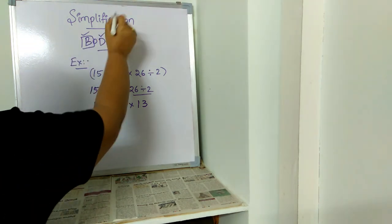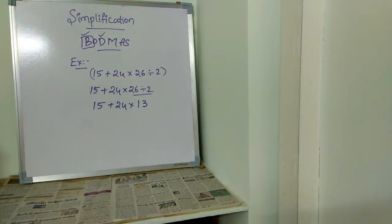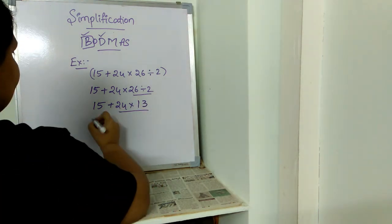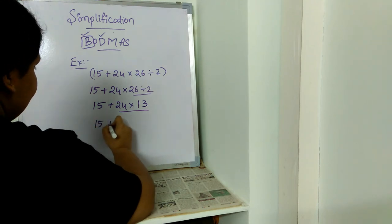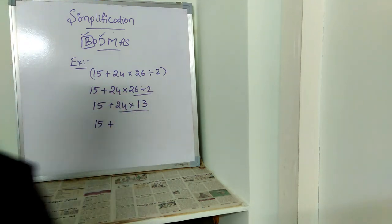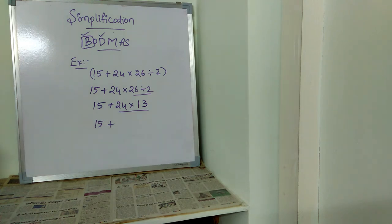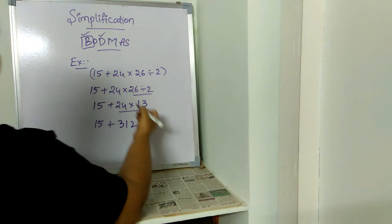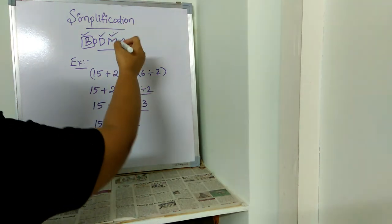Even division we have solved. Now after division, we have multiplication. This is the multiplication part. So solve this: 15 plus, solving this part, 24 into 13. 24 into 13, which is nothing but 312.